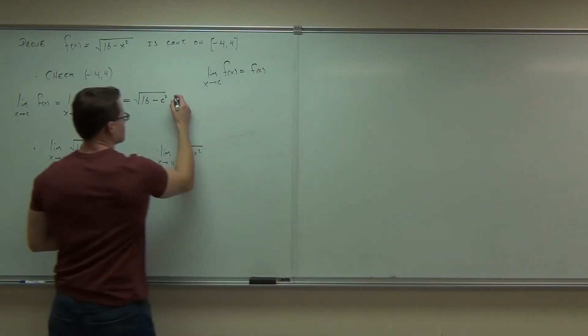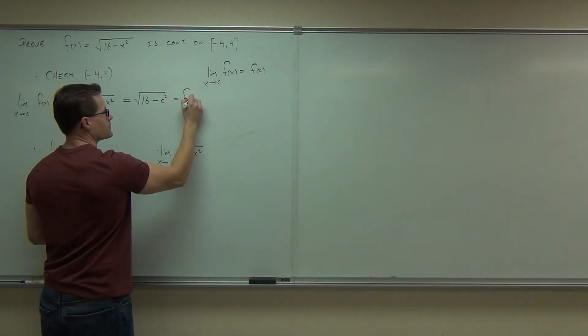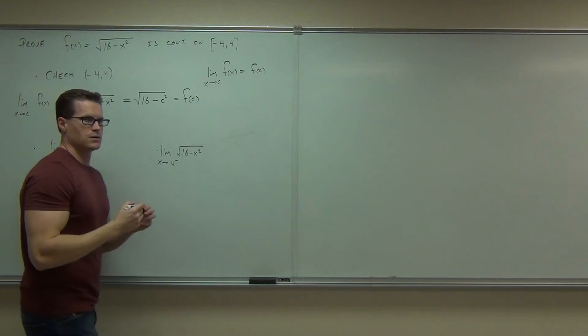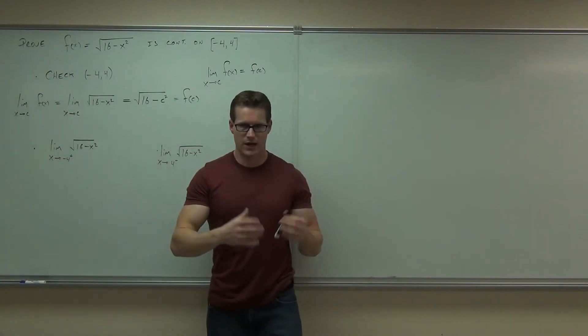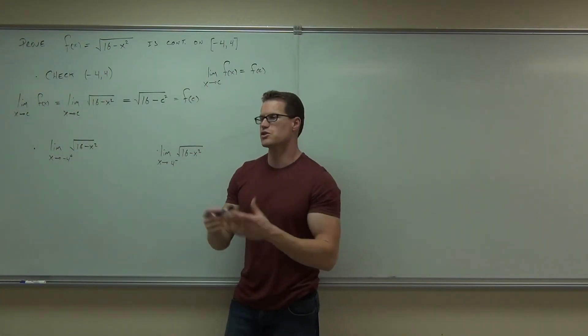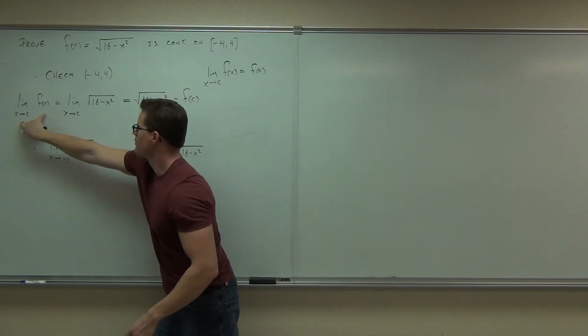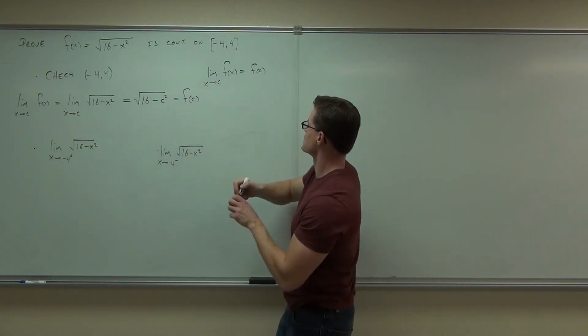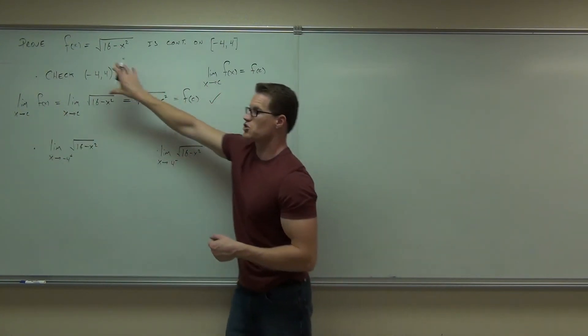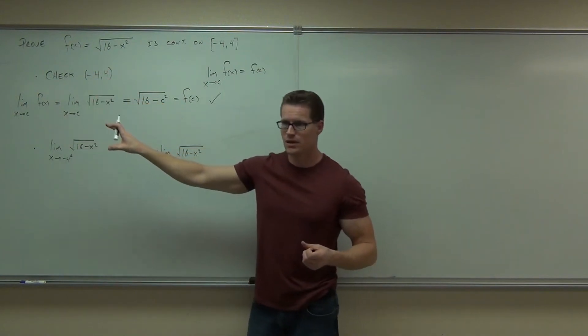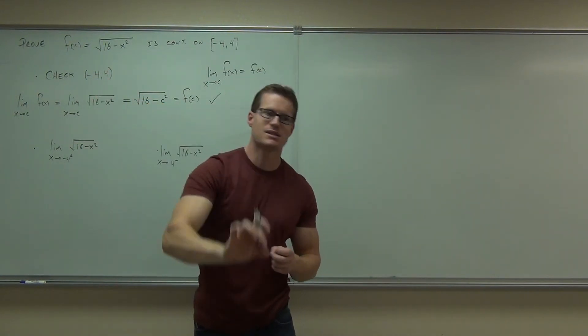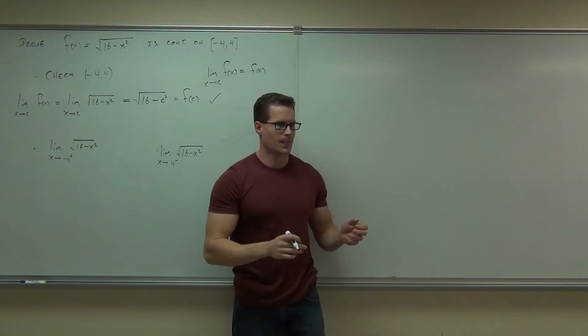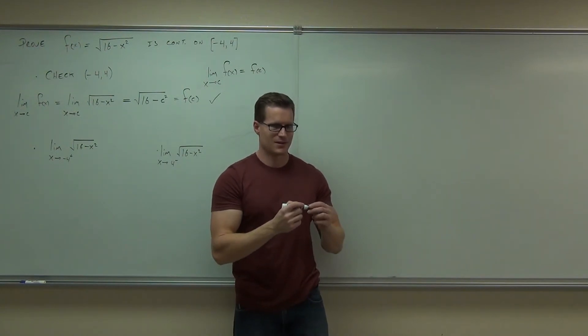Now check this out. Is this not f of c? Isn't that just f evaluated at c? You've just proved it. We've just proved that the limit of f of x as x approaches c equals f of c. We've proved that. That's checked for that. That's all you've got to do. Just make sure you take that, plug in the c, and see that it's exactly the same. You okay with that one so far?